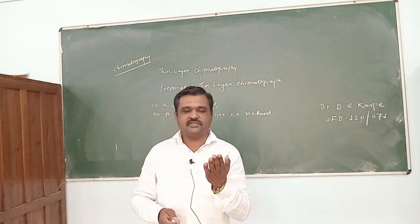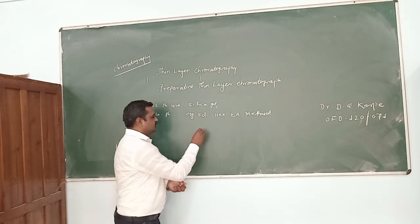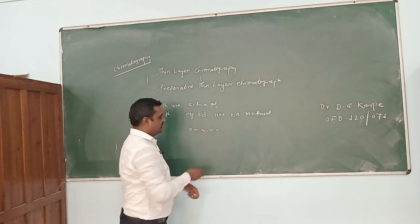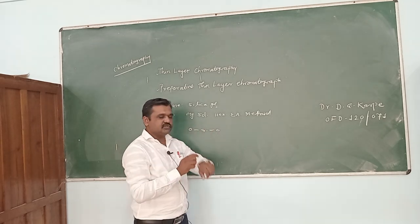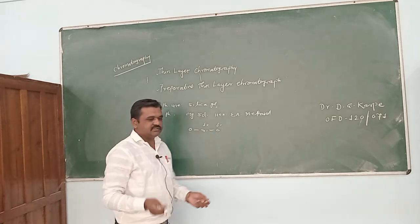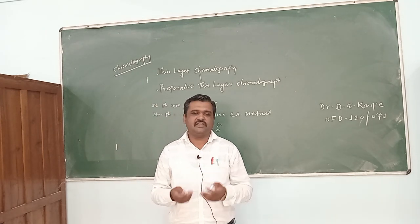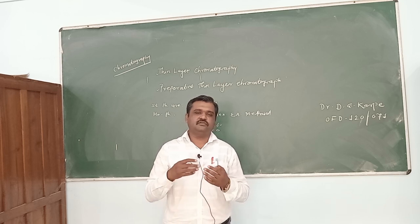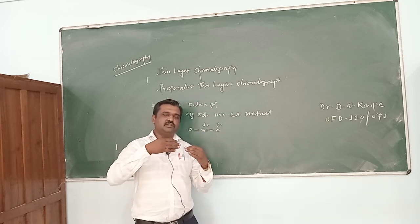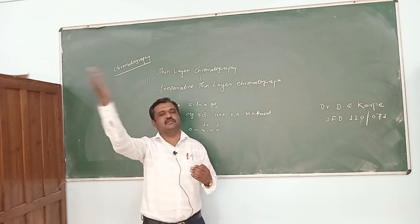The stationary phase consists of silica. Silica is polar, which consists of a Si-O bonding. And because of that, silicon has a delta positive charge and oxygen has a delta negative charge. Therefore, it is a polar stationary phase. Whatever mobile phase we are using, it is an organic solvent which may be used with increasing polarity, from low polarity to higher polarity.